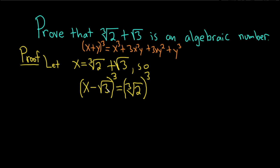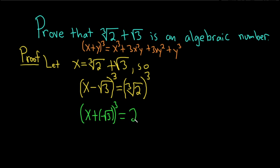Before we apply this formula, notice the formula has a plus and we have a minus in our problem. So let's rewrite it as x plus (negative square root of 3), and this whole thing is cubed. When we cube the cube root on the right-hand side, we simply get 2. Now let's go ahead and apply this formula.